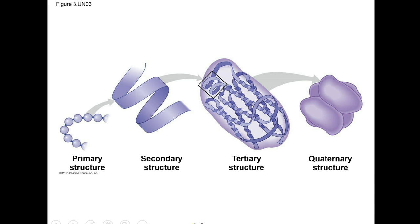When proteins lose their secondary, tertiary, or quaternary structure, they do not function. We call this denatured, or denaturation. Strong chemicals such as acids and bases, and extreme temperatures, can cause a protein to denature.